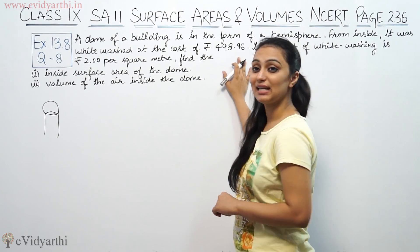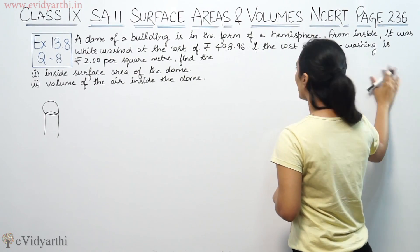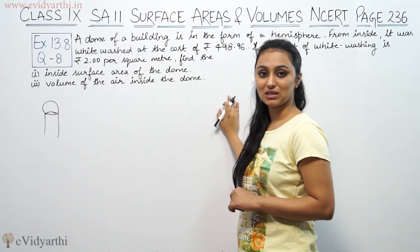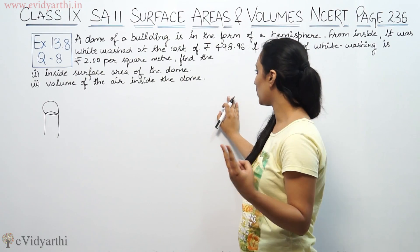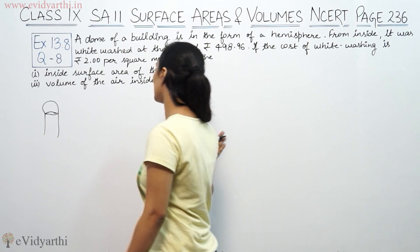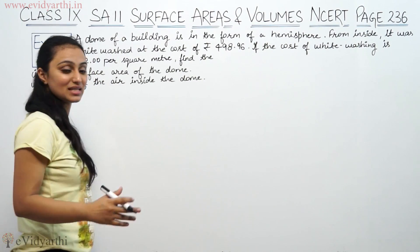That was 498.96. If the cost of whitewashing is 2 rupees per square meter, then what is the inside surface area of the dome?